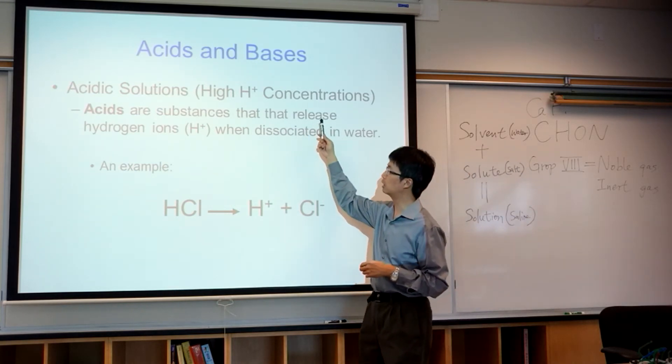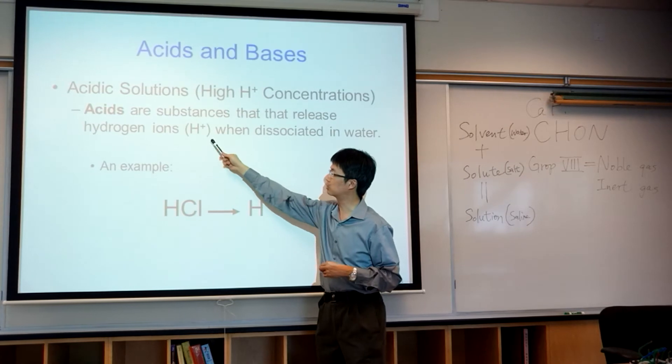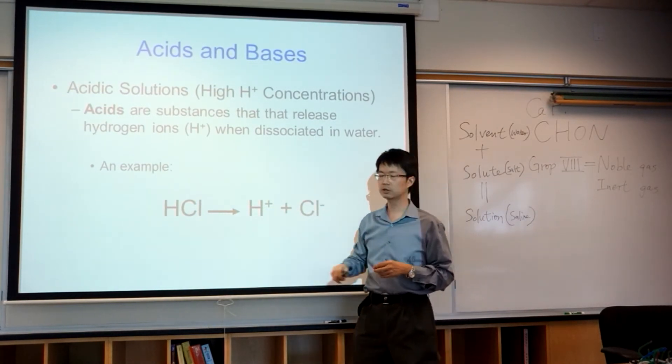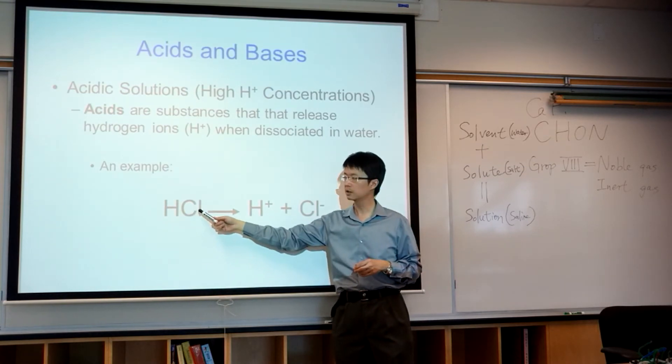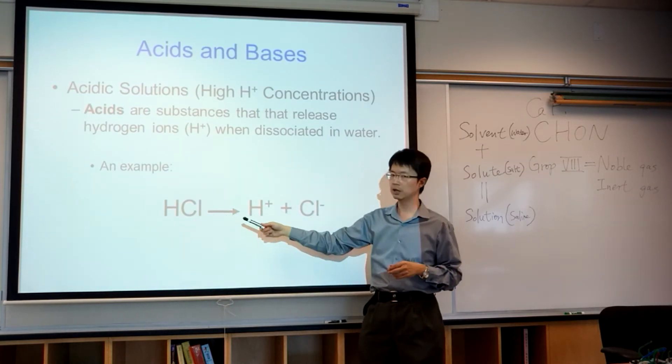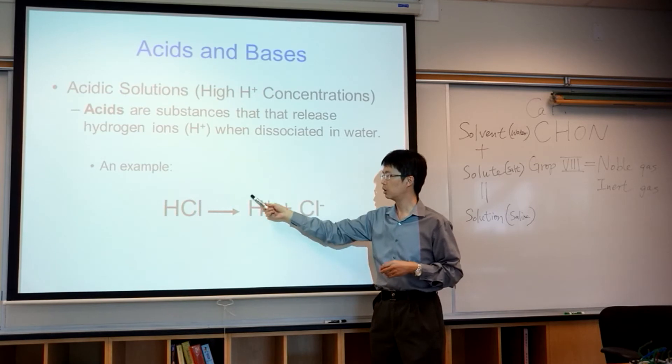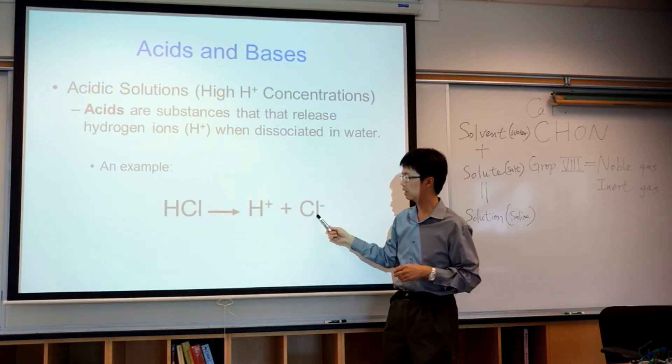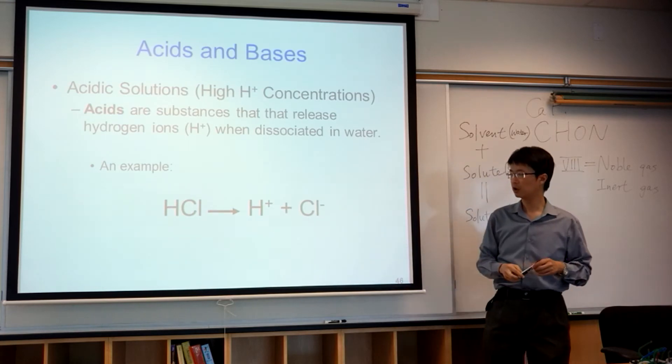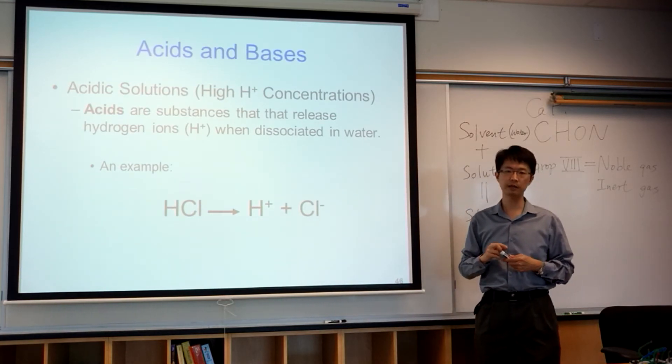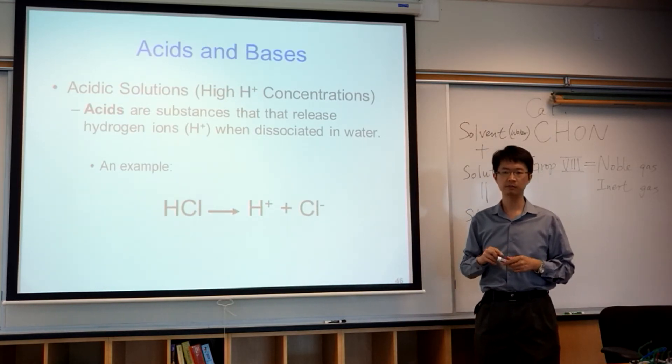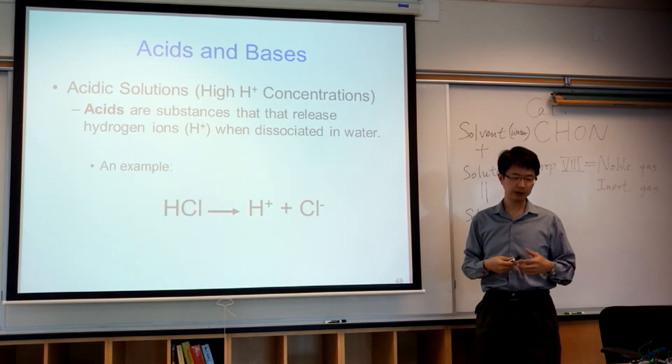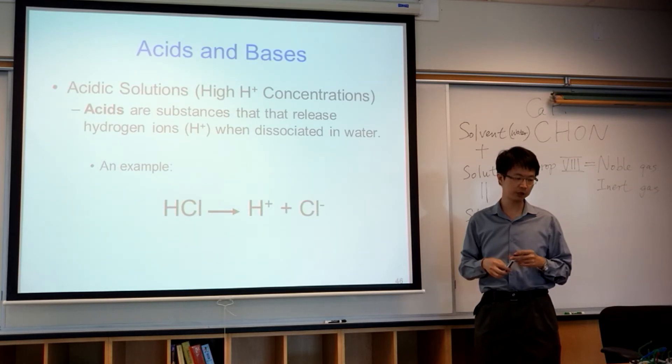We call it dissociate. An example is the famous hydrochloric acid. Hydrochloric acid, when it is dissolved in water, will dissociate into hydrogen ion (H+) and chlorine ion (Cl-). So where can you find hydrochloric acid? In your stomach, yes. Our stomach makes hydrochloric acid to help us with digestion.